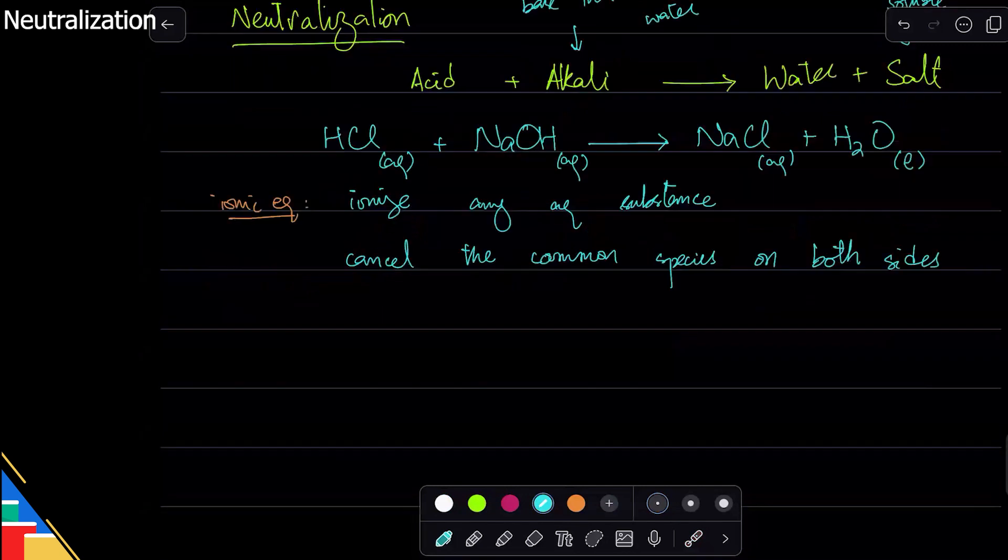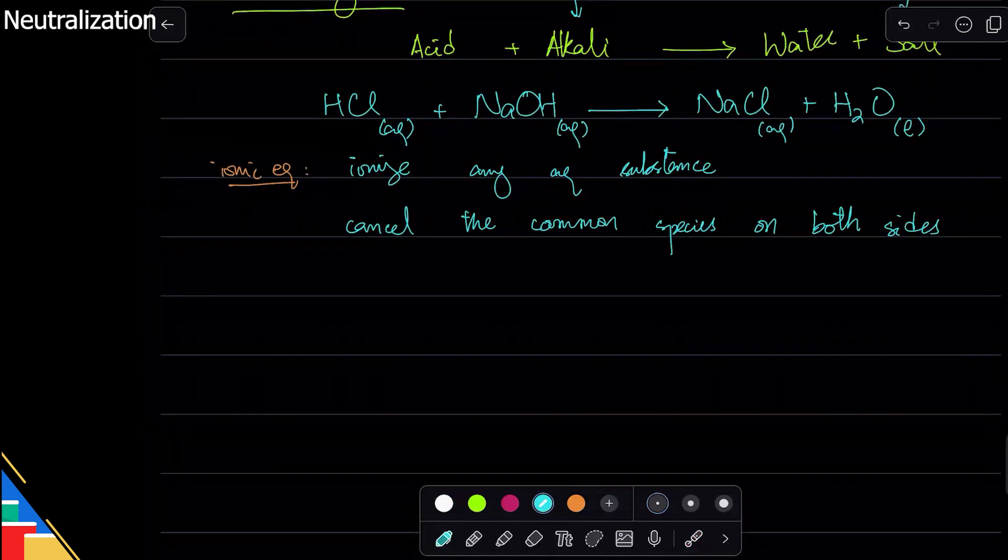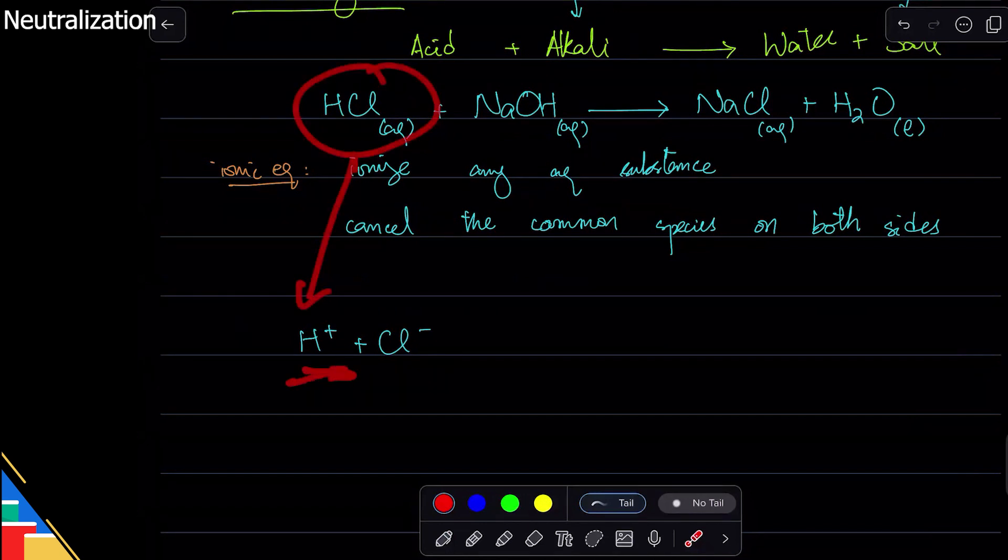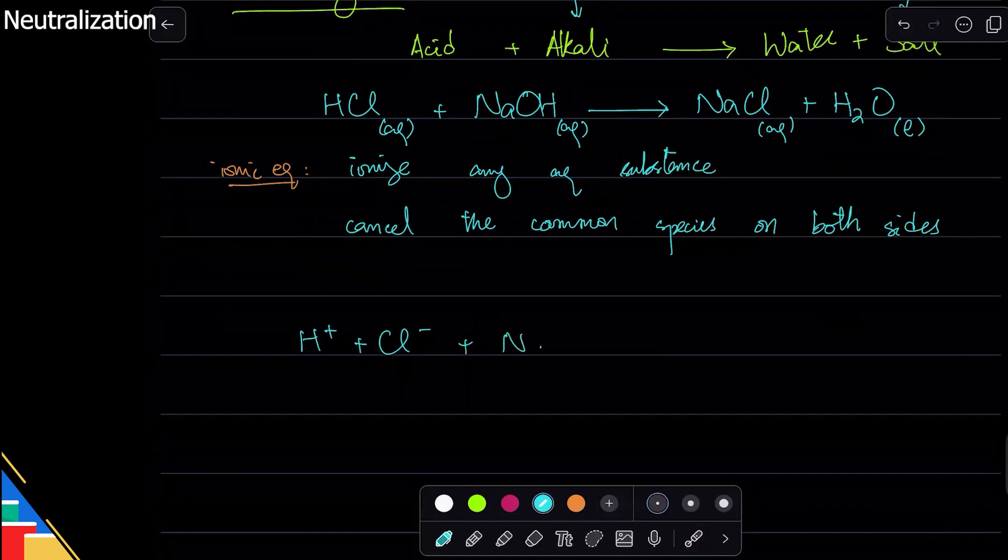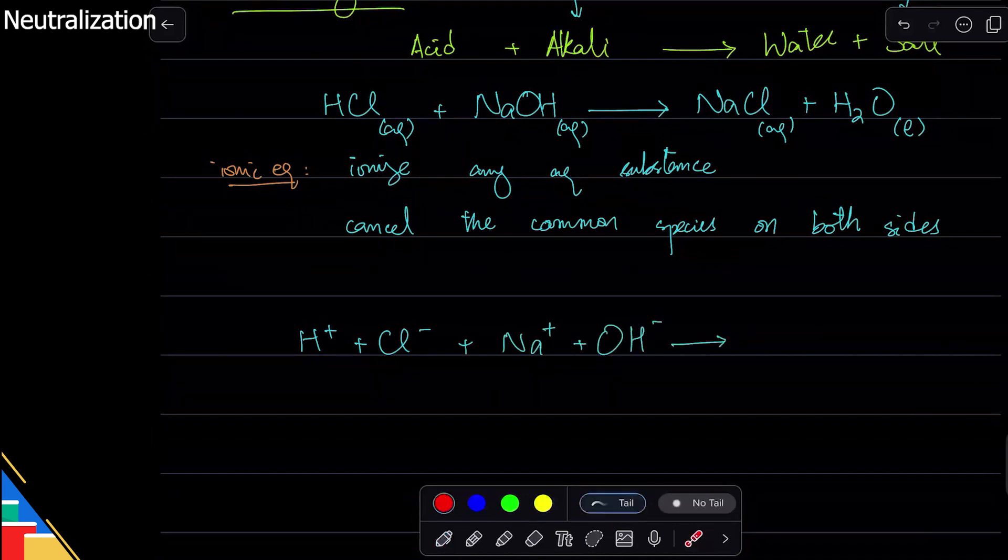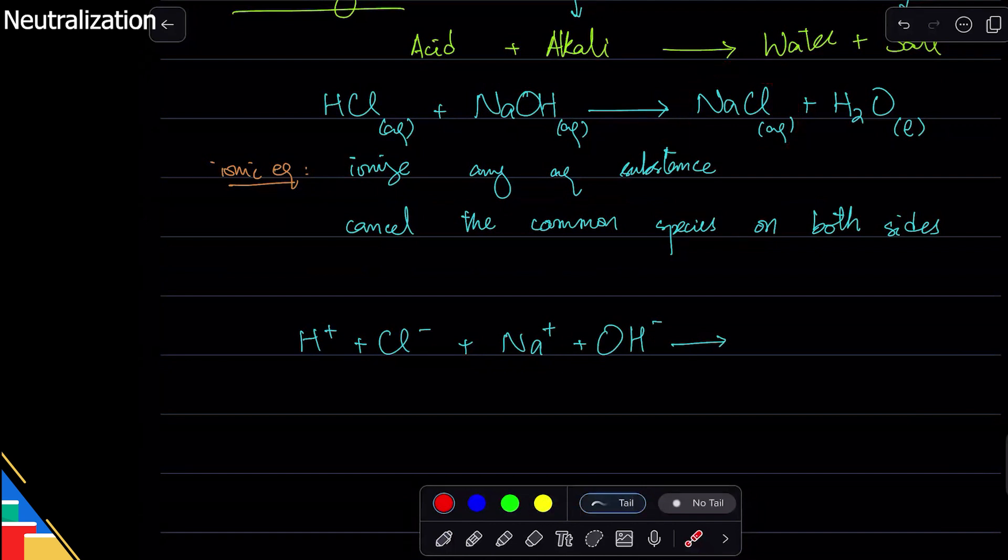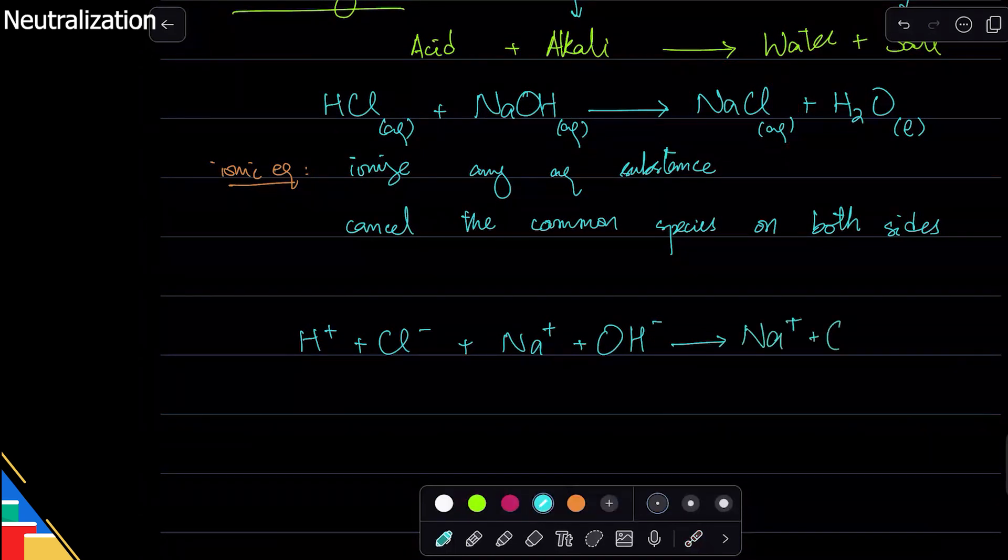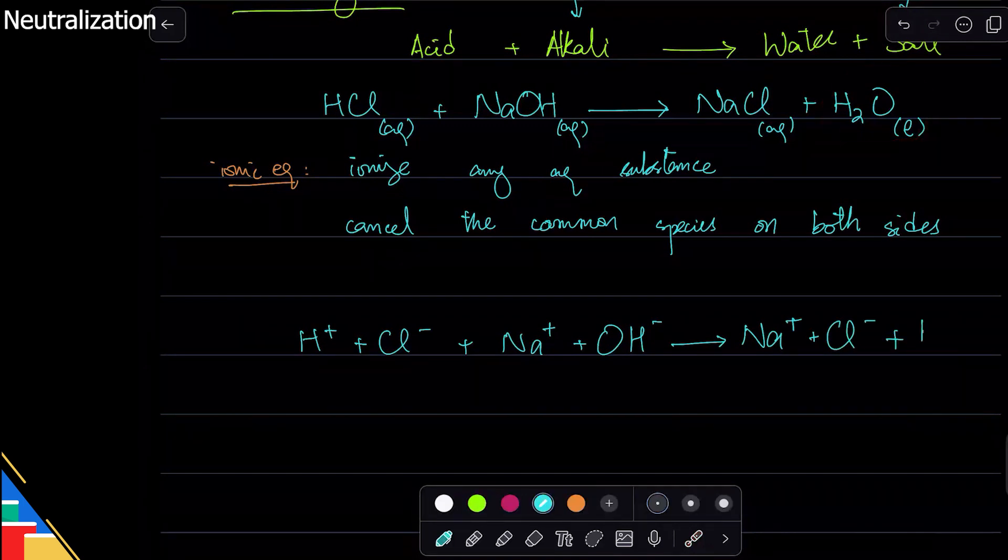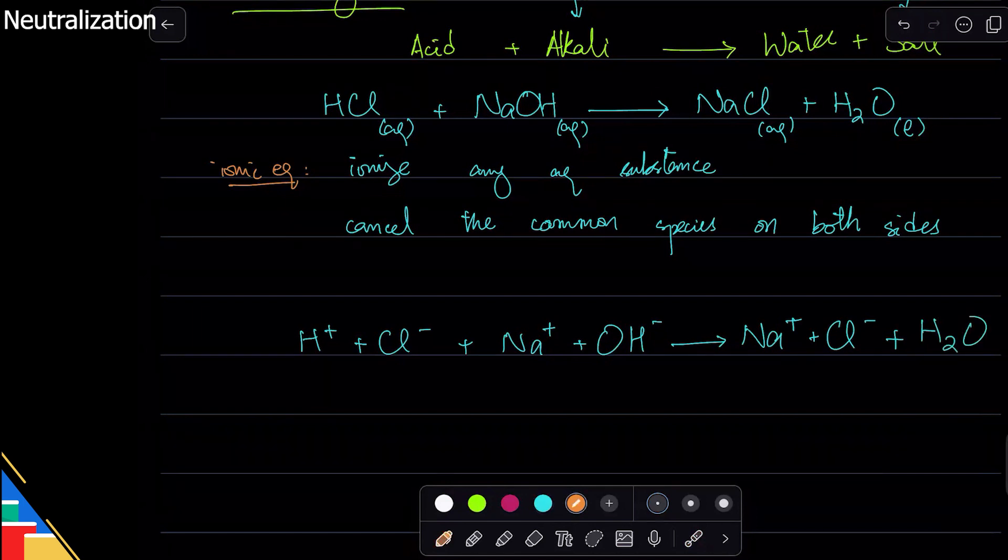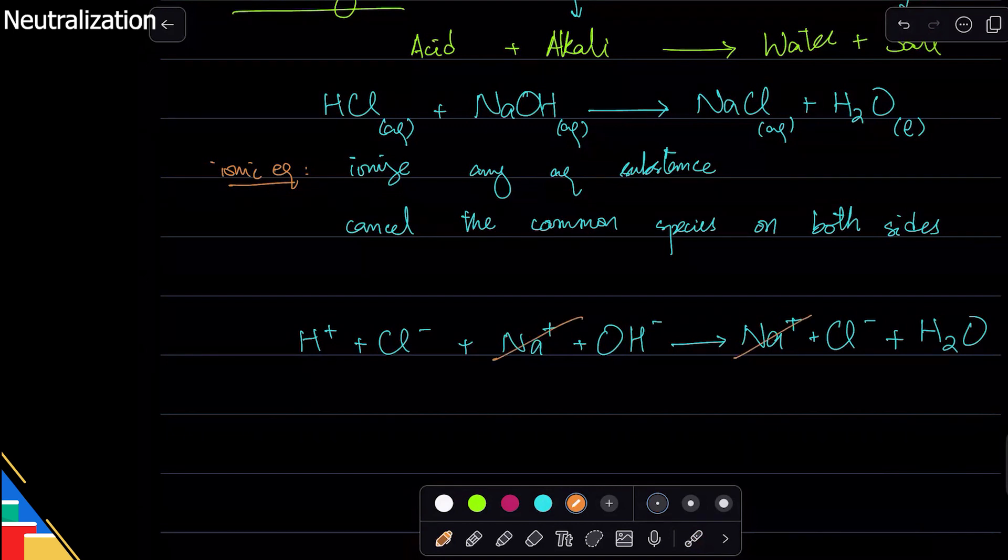In this one, HCl is aqueous, so I split it into hydrogen ion and chloride ion. Sodium hydroxide is also aqueous, so I split it into sodium ion and hydroxide ion. Sodium chloride is also aqueous, so I'll split that as well into sodium ion and chloride ion. But water is liquid, it's not aqueous, so it will stay as it is. Now second step: cancel any common species. Sodium ion on both sides, chloride ion on both sides.